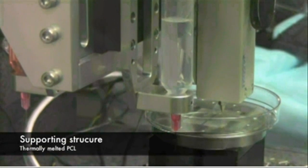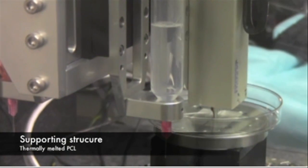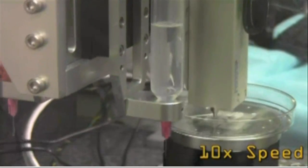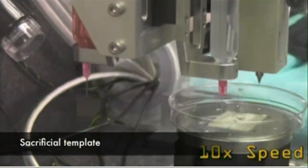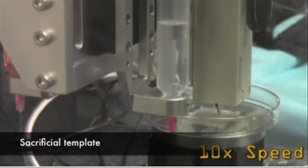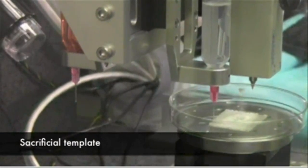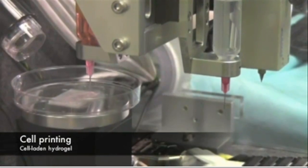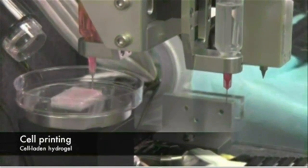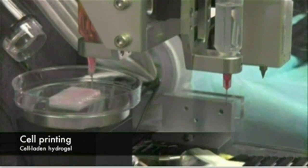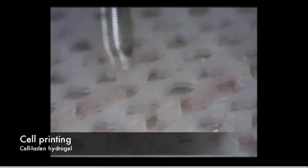Several proof-of-concept experiments demonstrated the capabilities of ITOP. To show that ITOP can generate complex 3D structures, printed human-sized external ears were implanted under the skin of mice. Two months later, the shape of the implanted ear was well-maintained and cartilage tissue and blood vessels had formed.